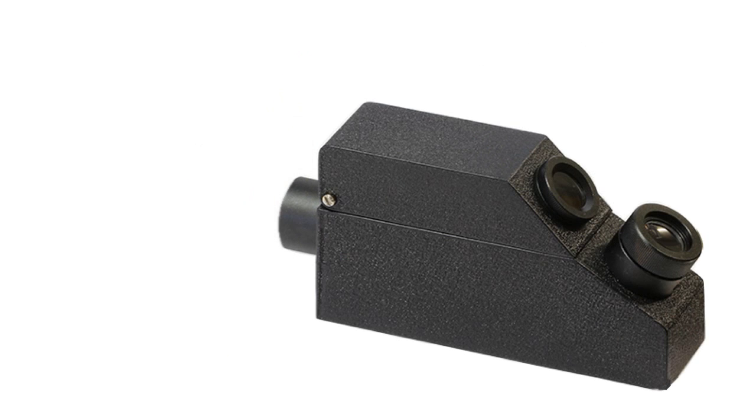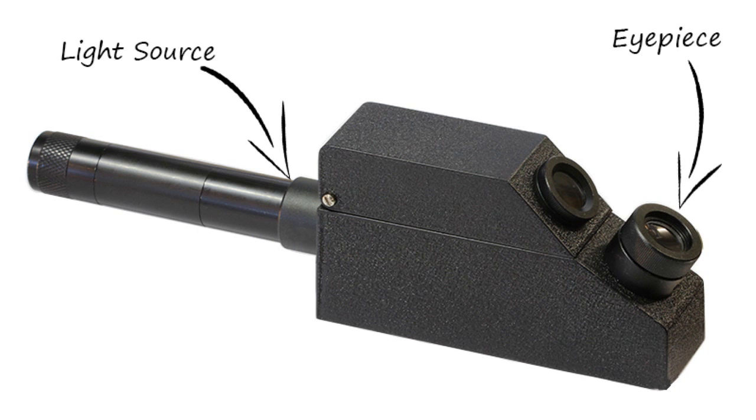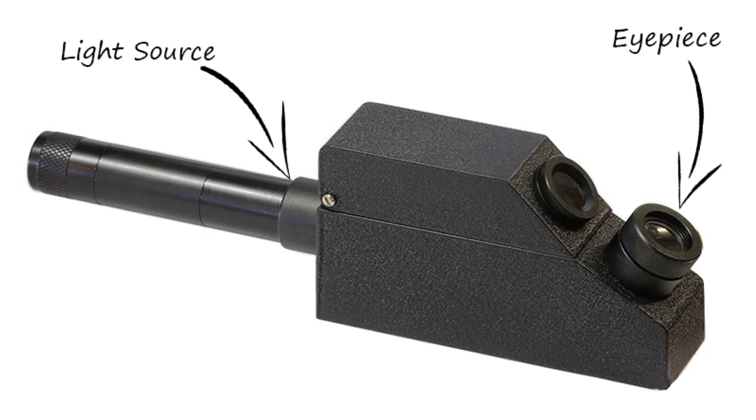A refractometer like this one has an eyepiece and a place at the back where we need to place a light source. This one has a purpose built torch which attaches to the back which makes it very handy and portable. When we open the lid of the instrument we notice a gem table and a rectangular area which is the surface of the prism inside where we are going to place the gemstone.